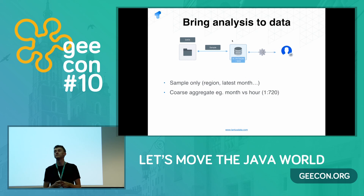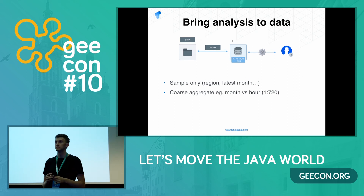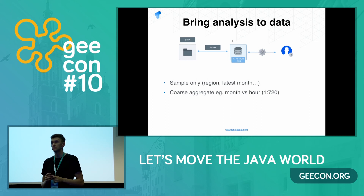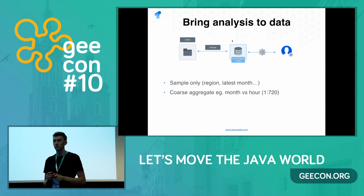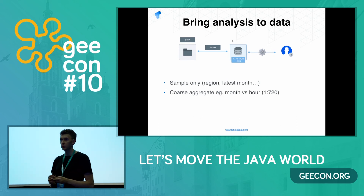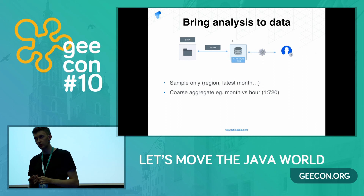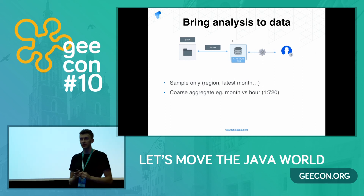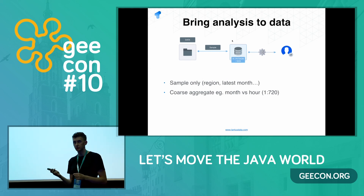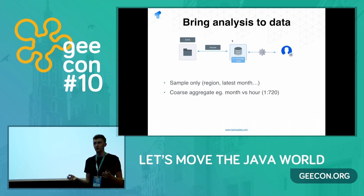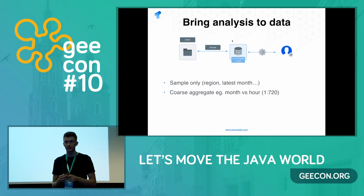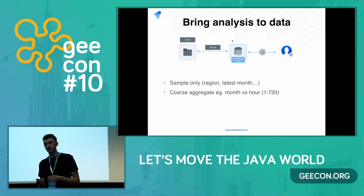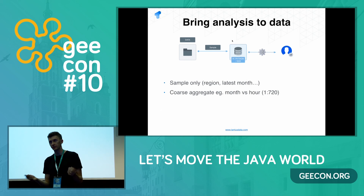Question: Are you familiar with virtualization in Spark — for example Docker, VMware, Kubernetes — and do you recommend it in production? Answer: I haven't worked with Kubernetes and Spark much. It was only recently in Spark 2.3 that they brought Kubernetes support, so you could use it instead of YARN as a resource manager. Not many companies have done that yet, and I don't have much experience with it.